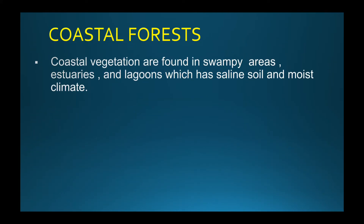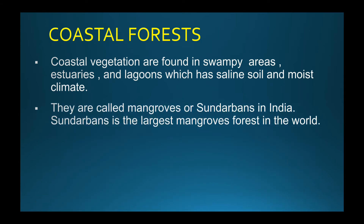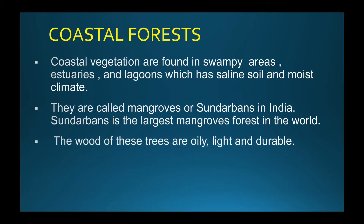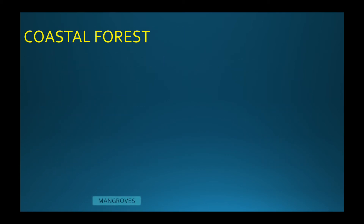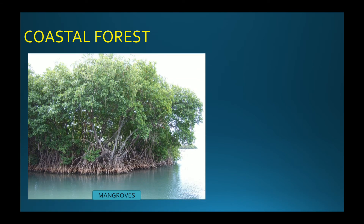Coastal vegetation is found in swampy areas — marshy estuaries and lagoons which have saline soil and a moist climate. They are called mangroves, or Sundarbans in India. The Sundarbans is the largest mangrove forest in the world. The wood of these trees is oily, light and durable. Coastal vegetation is mainly found along the eastern coast. Mangroves protect us from tsunamis and high tides.